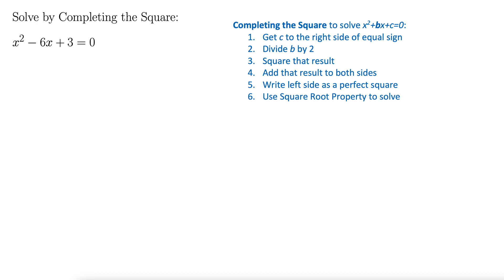Try this one on your own using completing the square. We have x squared minus 6x plus 3 equals 0. Here are the steps right here on the right. Of course, you'd want to internalize these because you wouldn't have them on something like an exam or a quiz. Go ahead and try this out on your own, pause the video, and then we'll work it together.